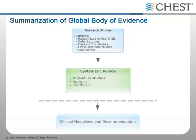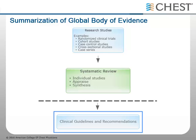As highlighted in the IOM standards, the systematic review process is an important component to guideline development. This is a brief synopsis of how we move from a systematic review to developing evidence-based clinical guidelines. In a systematic review, we identify and assess the quality of included studies, critically appraise the body of evidence, and then develop a qualitative or quantitative synthesis. This information is then used to inform clinical guidelines.